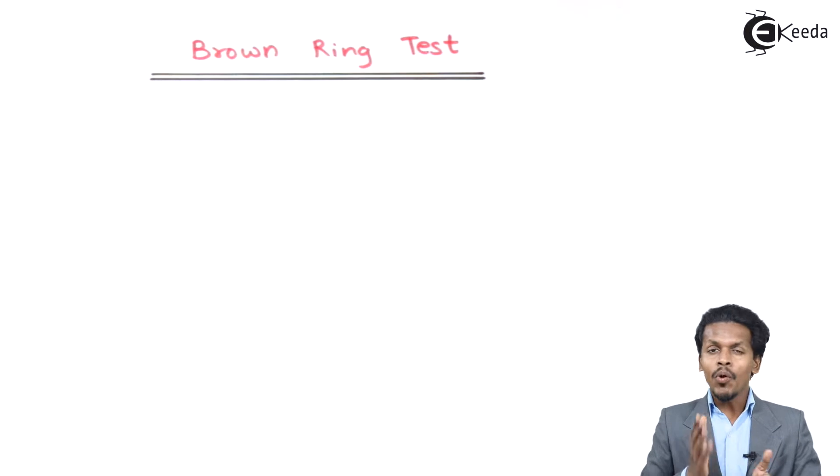The Brown Ring Test is a qualitative analysis for the presence of nitrate ions, through which we could easily determine whether nitrate ions are present or not. We have a certain procedure that we have to follow to find out the presence of nitrate ions.